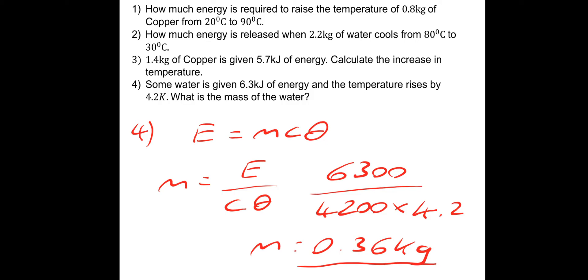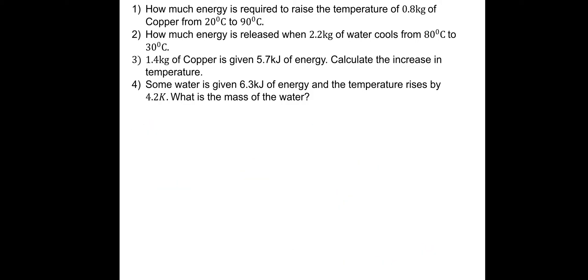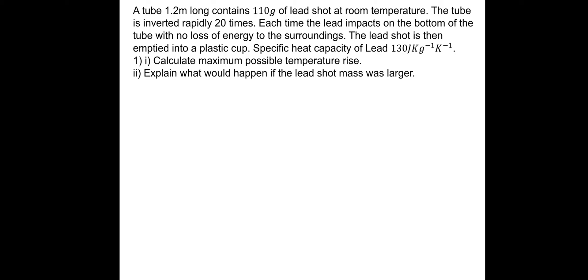Let's try something a little bit trickier. If you'd like to pause and have a go at this one, then I'll take you through the answer. A tube 1.2 meters long contains 110 grams of lead shot at room temperature. The tube is inverted rapidly 20 times. Each time, the lead impacts on the bottom of the tube with no loss of energy to the surroundings. The lead shot is then emptied into a plastic cup. Specific heat capacity of lead is 130 joules per kilogram per Kelvin. There's two questions. Let's do part one first. Calculate the maximum possible temperature rise.